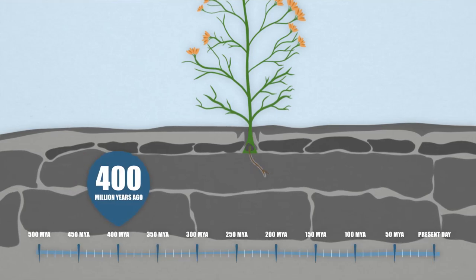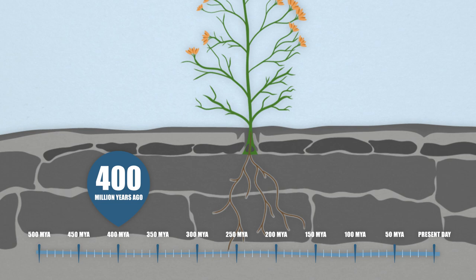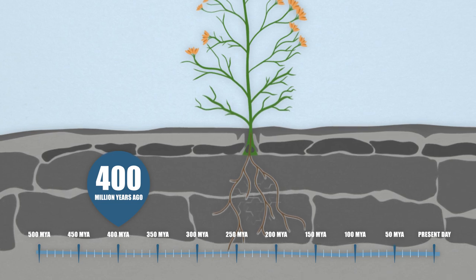Roots penetrate the rocky exterior at the surface and as they grow deeper and deeper they break the rock up into smaller and smaller pieces.